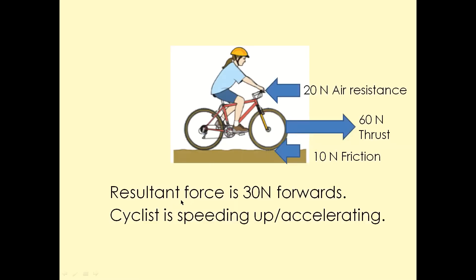Now, the way we find the resultant force, we add all the forces pointing in one direction and take away from the force in the other direction. Backward forces: 20 plus 10 equals 30 Newtons. Forward force is 60 Newtons. So the resultant force is 60 minus 30, which equals 30 Newtons forwards.